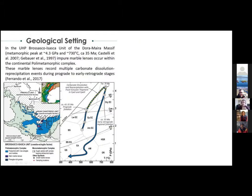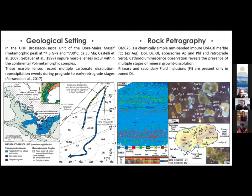To test these problems, we selected as a case study a marble lens in the ultra-high-pressure unit of the Dora-Maira massif in the western Alps, which experienced multiple prograde-to-peak dissolution-precipitation events until it reached its metamorphic peak at 4.3 GPa and 730°C. This example is intentionally chemically simple — a pure dolomitic calcic marble — where primary fluid inclusions are preserved only in the prograde-to-peak diopside.